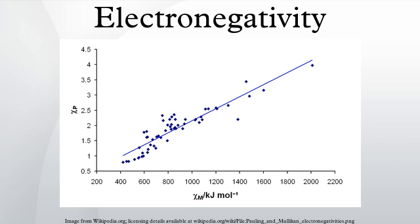Electronegativity, as it is usually calculated, is not strictly a property of an atom, but rather a property of an atom in a molecule. Properties of a free atom include ionization energy and electron affinity. It is expected that the electronegativity of an element will vary with its chemical environment, but it is usually considered to be a transferable property — similar values will be valid in a variety of situations. On the most basic level, electronegativity is determined by factors like the nuclear charge and the number and location of other electrons present in the atomic shells. The opposite of electronegativity is electropositivity, a measure of an element's ability to donate electrons.